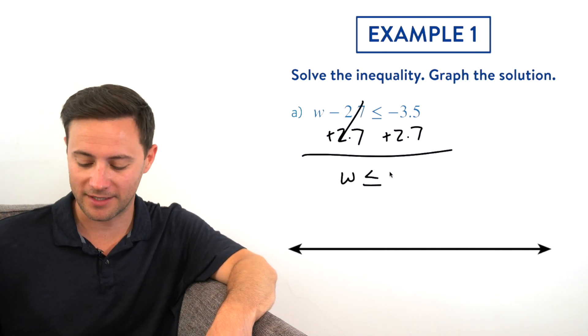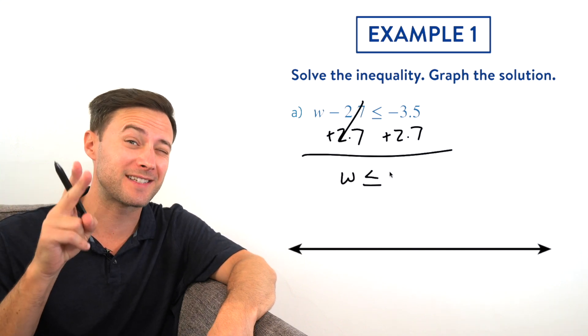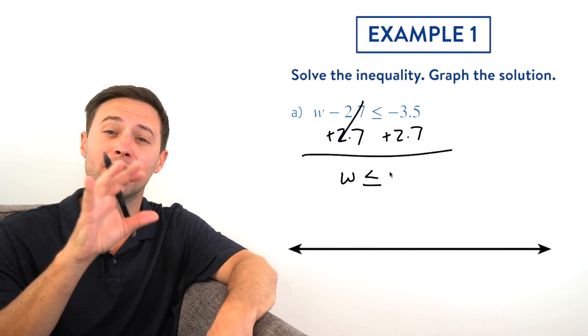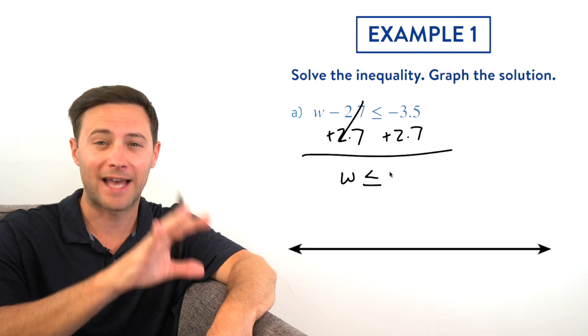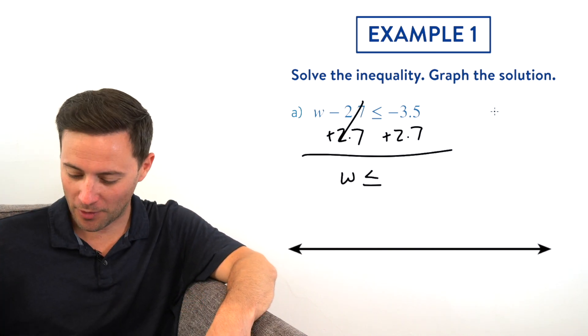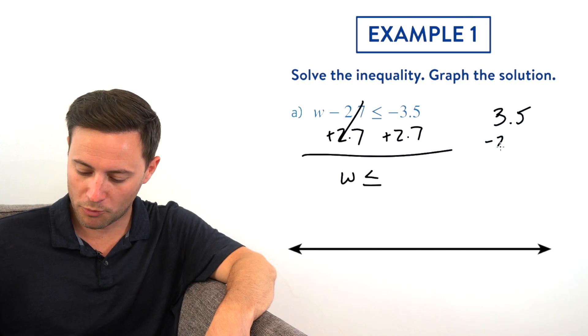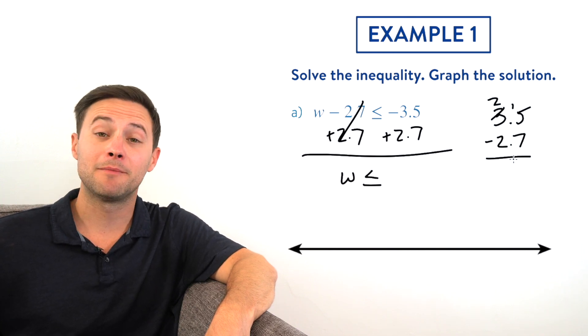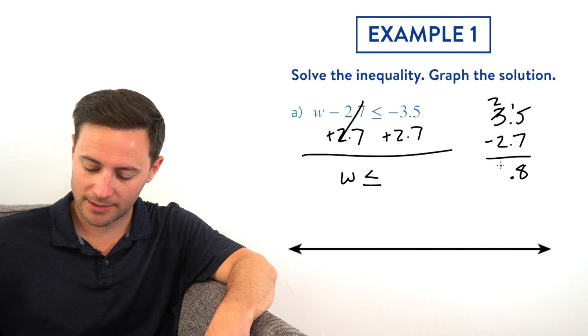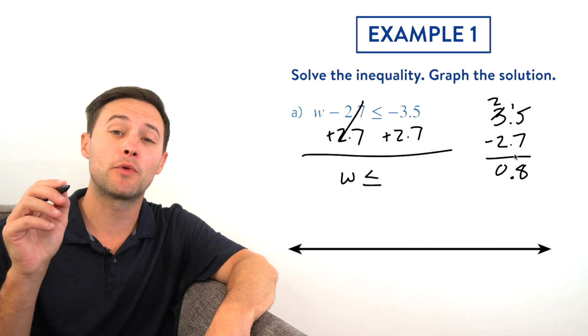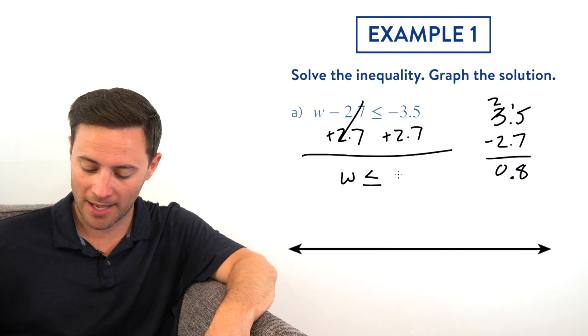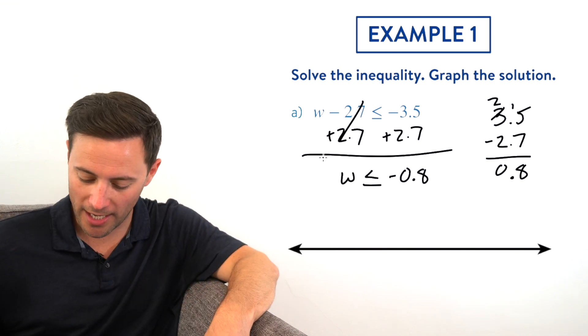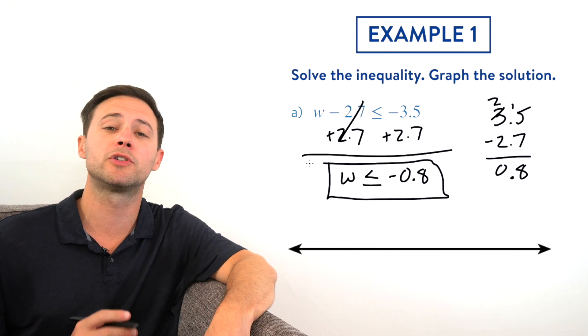If not, we can just do it off to the side. Remember, when you're adding different signs—meaning a negative and a positive together—you need to subtract them, and whichever number had the greater absolute value, that's what sign it's going to be. So here we go: 3.5 minus 2.7. I'm going to borrow, that becomes 15. 15 minus 7 is 8. And remember, the negative 3.5 had the greater absolute value, so that means it's going to be negative 0.8. So w is less than negative 0.8. We can box our solution. Now let's graph.